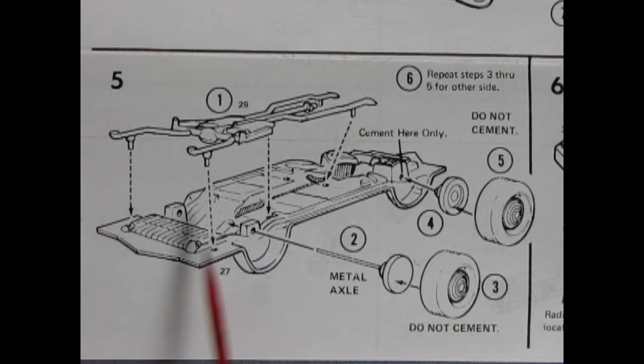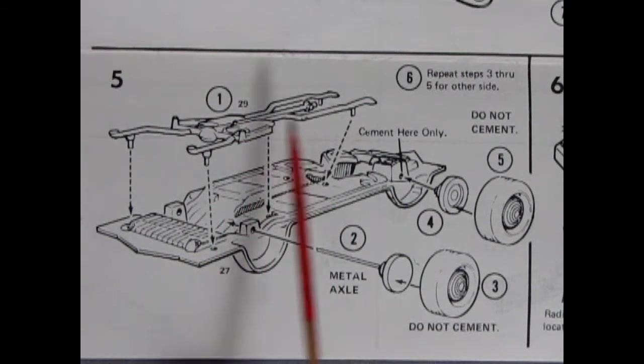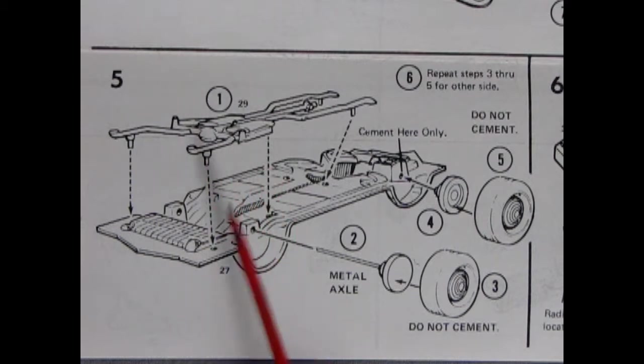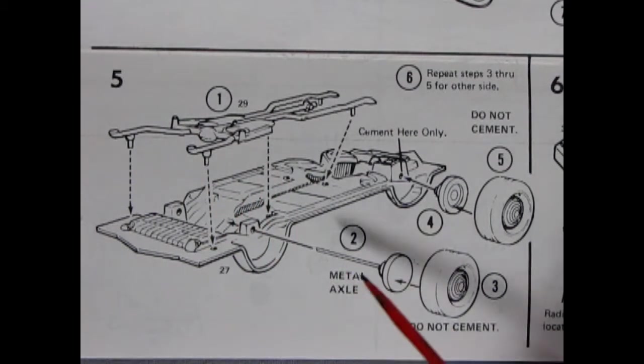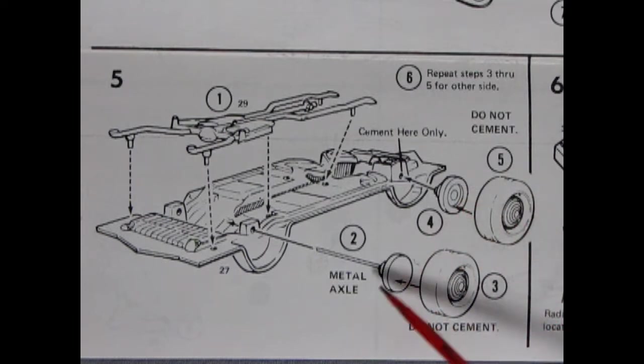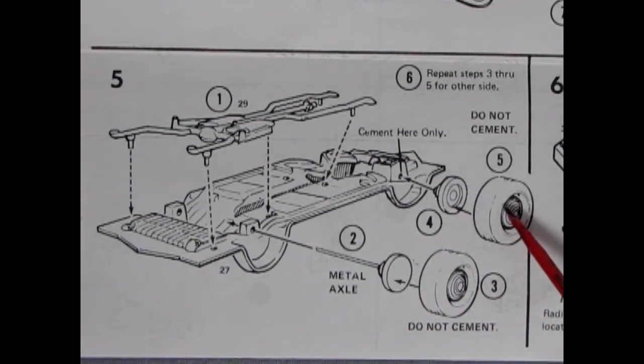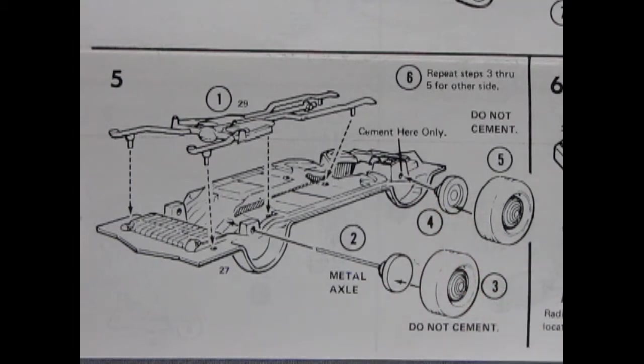Panel 5 shows our chassis with our differential and exhaust pipes and drive shaft all molded as one piece dropping into place. Then our metal axles go through these blocks and the wheel backs will go into place and our wheels will pop onto the wheel backs.